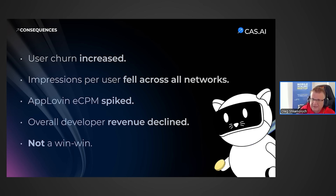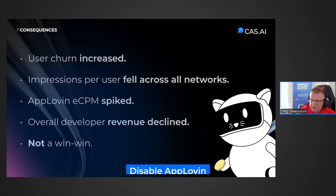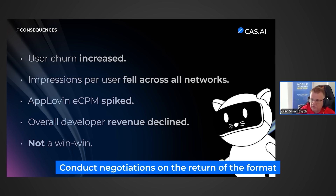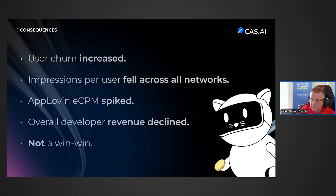What can be done? The classic solution is to disable AppLovin, however that is not necessarily the best option — it's actually a really bad one. The simplest option is to negotiate the return of the previous ad format. You will need to request that these kinds of ads are not shown in your application. Yes, this will affect your eCPM, but in exchange you'll gain significant benefits — your user churn rate will simply stop being so terrible.